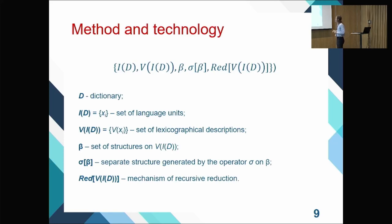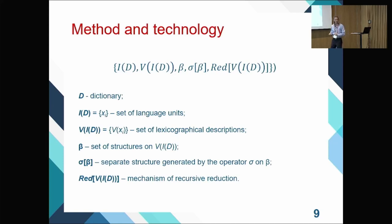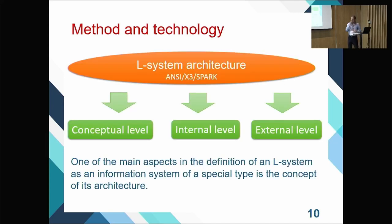The colleague is also a mathematician and likes formulas. So we have: D — where D is dictionary, ID is a set of language units, and so on. We use this formula and agree with the colleague that this is the right one. The L-system architecture has three levels: a conceptual level, an internal level, and an external level.